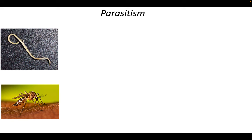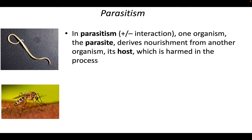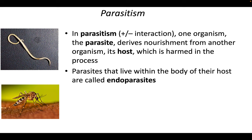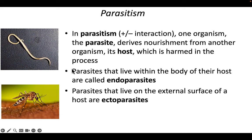With parasitism, we have a plus-minus interaction. The parasite derives nourishment from the host — that's positive for the parasite — and the host is harmed in the process, making it negative for the host. You can have endoparasites that live within the body of their host, like a roundworm living inside human intestines. Then you have ectoparasites, which live on the surface and feed on the surface of the host, either staying attached permanently or very temporarily, like a mosquito.